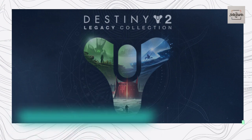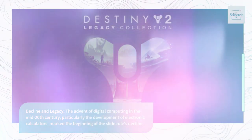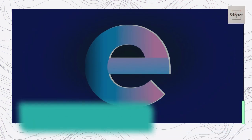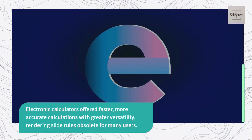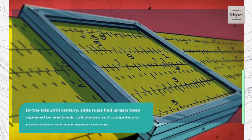Decline and Legacy: The advent of digital computing in the mid-20th century, particularly the development of electronic calculators, marked the beginning of the slide rule's decline. Electronic calculators offered faster, more accurate calculations with greater versatility, rendering slide rules obsolete for many users. By the late 20th century, slide rules had largely been replaced by electronic calculators and computers in professional and educational settings.